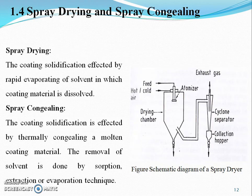Spray drying and spray congealing method: the schematic diagram of a spray dryer is shown here. In spray drying, coating solidification is affected by rapid evaporation of the solvent in which the coating material is dissolved. Spray congealing involves solidification by thermally congealing a molten coating material. Removal of solvent is done by sorption, extraction, and evaporation techniques.